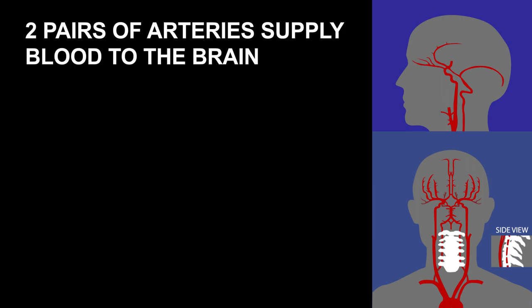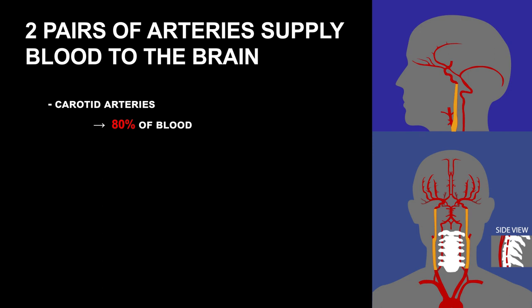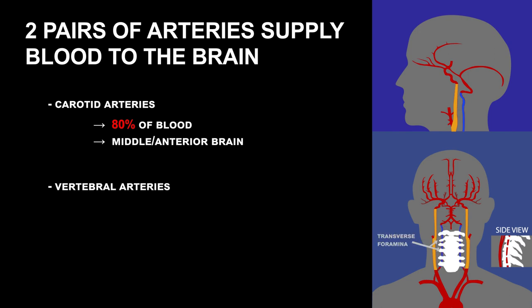Two pairs of arteries supply blood to the brain. The carotid arteries supply 80% of the brain's blood, primarily to the middle and anterior portions of the brain. The vertebral arteries, which ascend through the transverse foramina of the cervical vertebrae, join to form the basilar artery and supply the remaining 20% of the brain's blood.